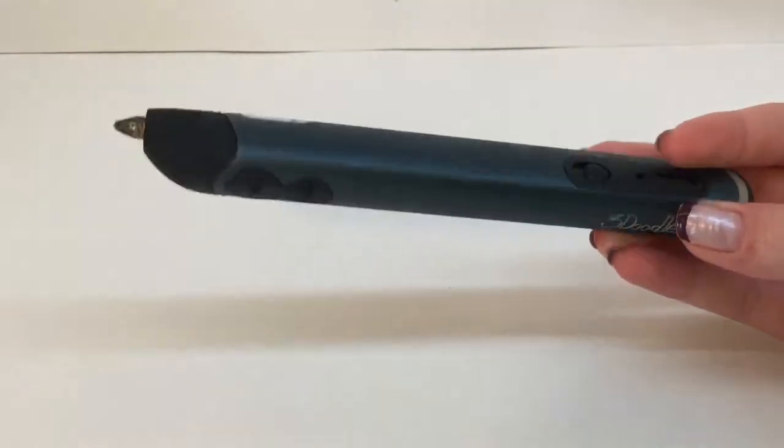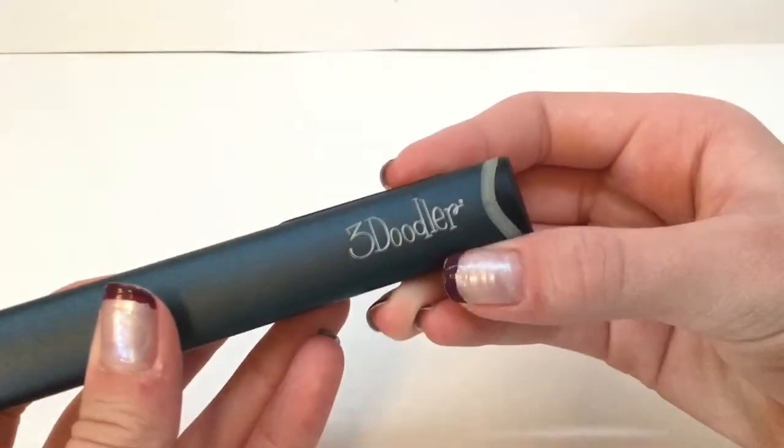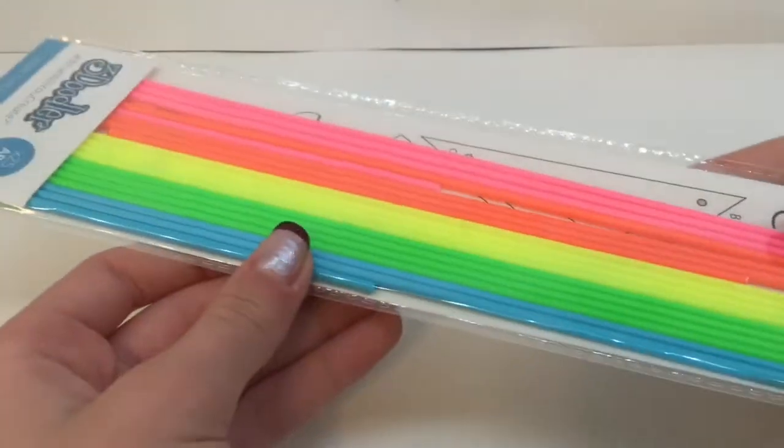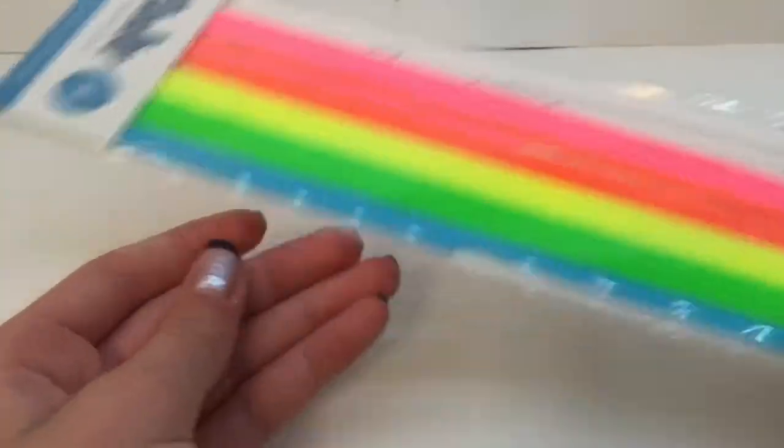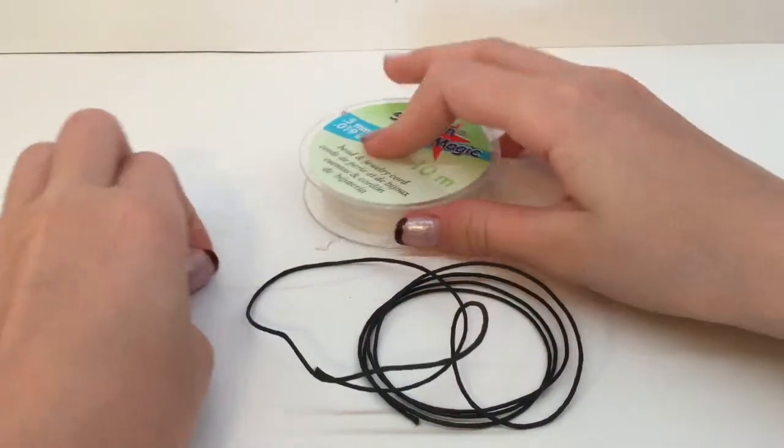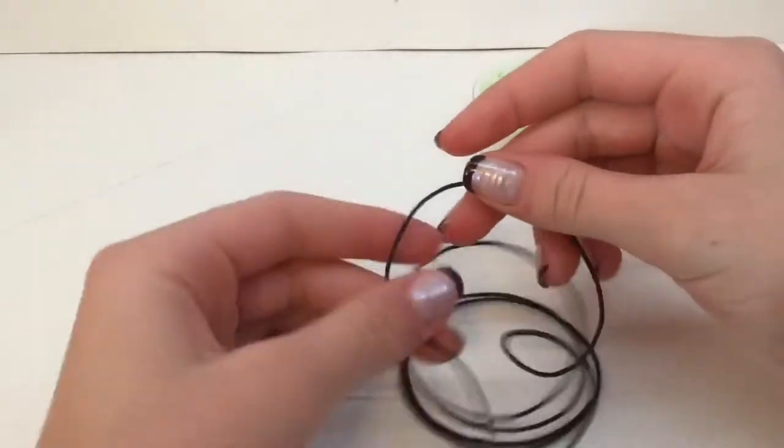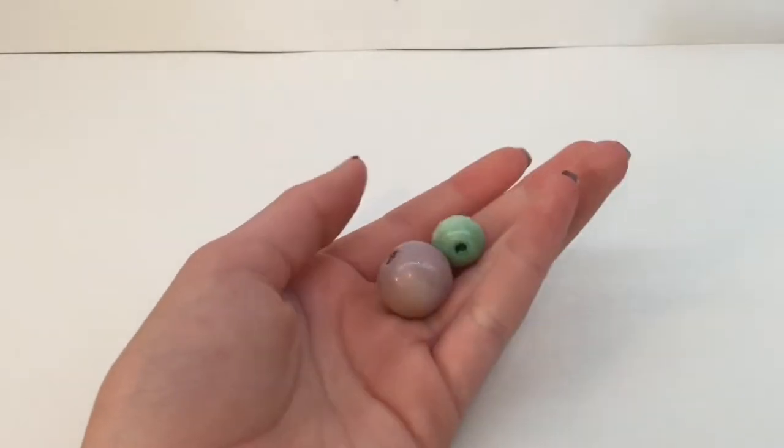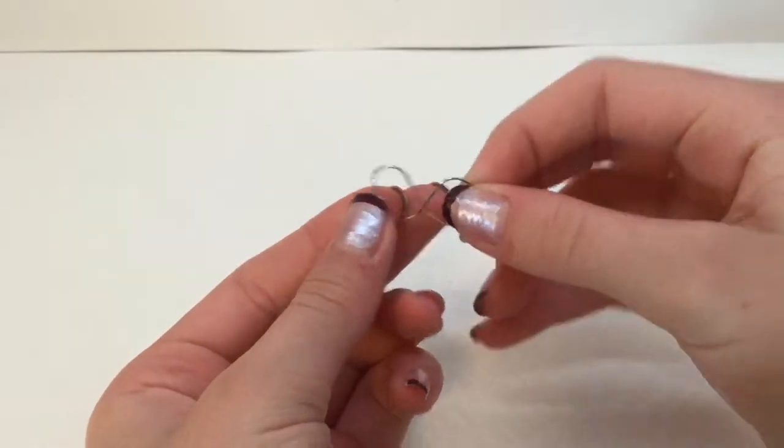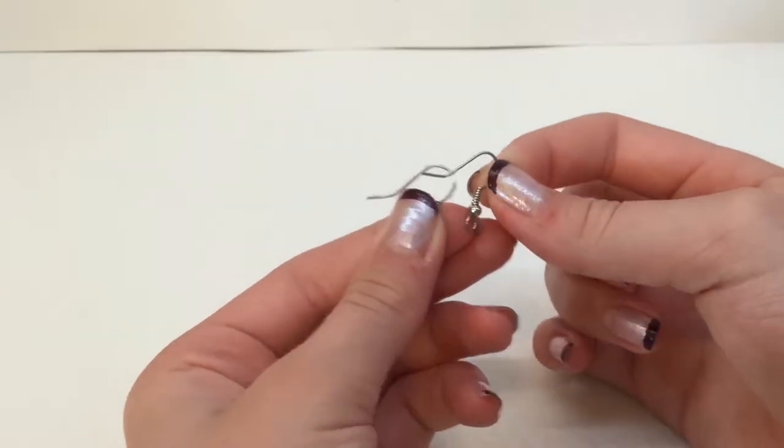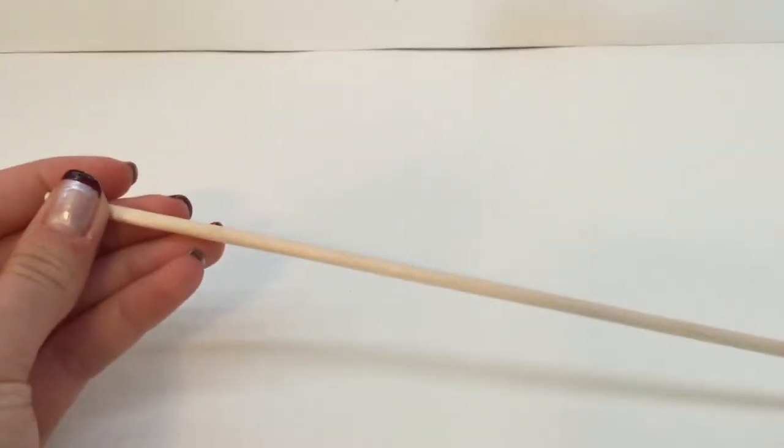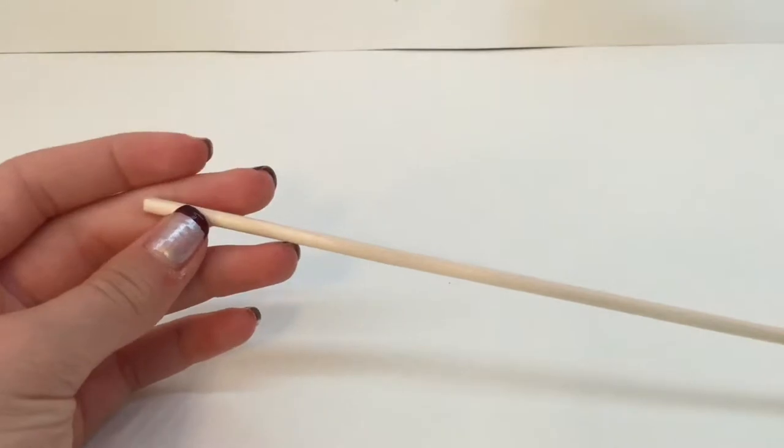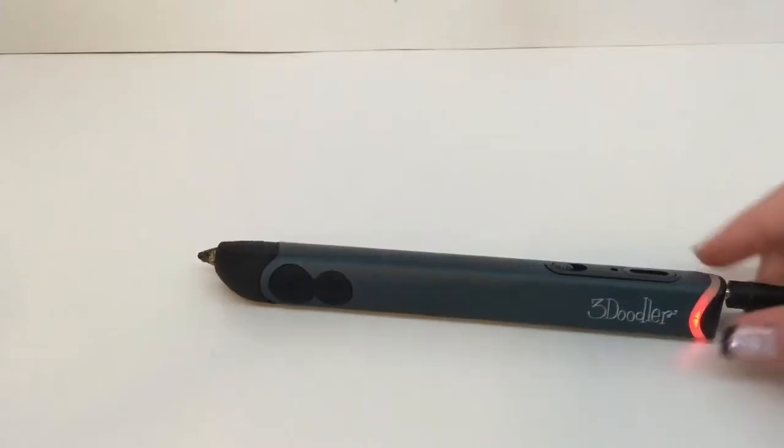What you'll need is a 3D pen—I'm using the ThreeDoodler Create—some plastic of your choice (I'm using ABS plastic), some string (I have stretchy clear string and black string), some beads, little earring pieces that you can find at any craft store, and a wooden dowel which is optional but really helps.